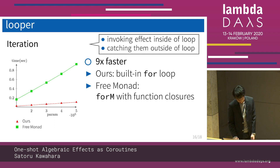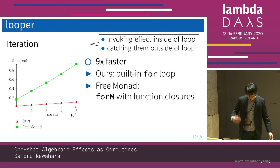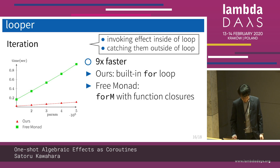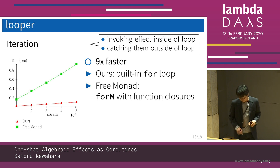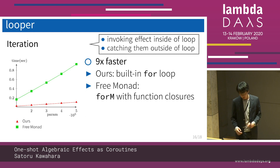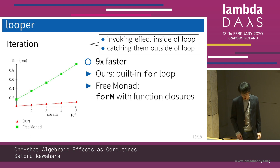The third benchmark, 'looper,' is about iteration. This program invokes an effect inside a loop and the effect is caught by the handler outside the loop. The result is 9 times faster than the free monad. It is natural to use coroutines across a for-loop in coroutine programming, so we can naturally combine our library with the built-in for-loop. In contrast, the free monad requires a monadic operator such as 'forM' to repeat computation, creating many function closures at runtime.